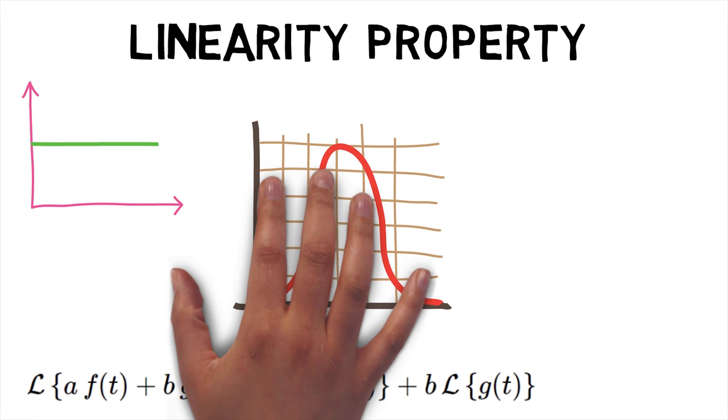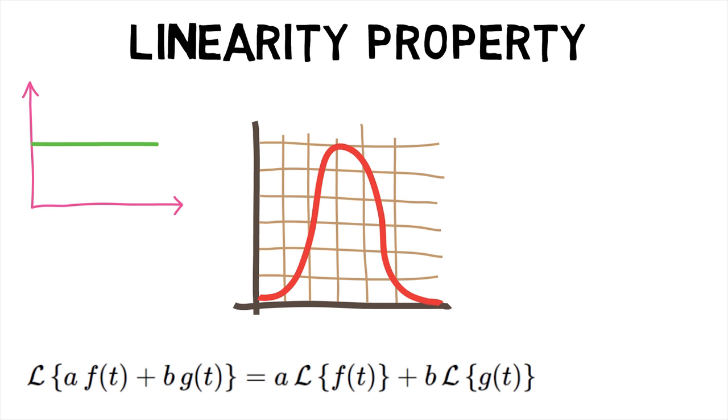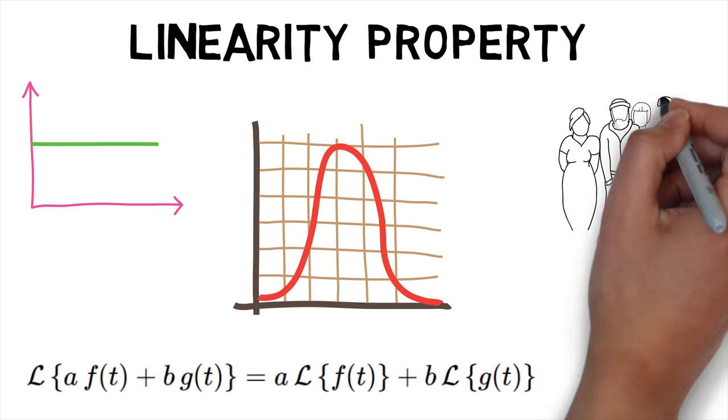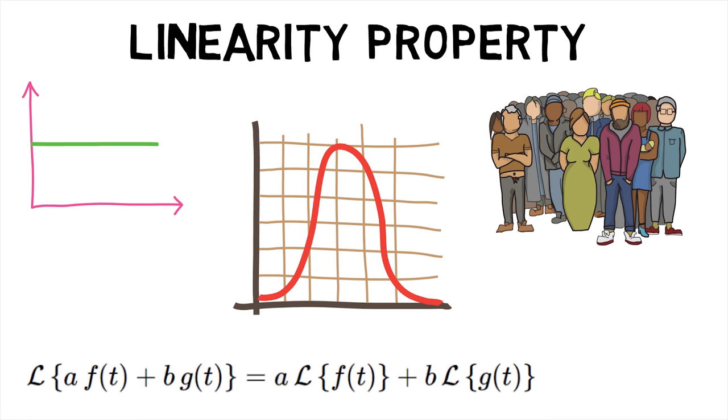then Laplace transform of the sum given by a of f of t and b of g of t is equal to a multiplied by Laplace transform of f of t plus b multiplied by Laplace transform of g of t. This property can be easily extended to more than two functions.